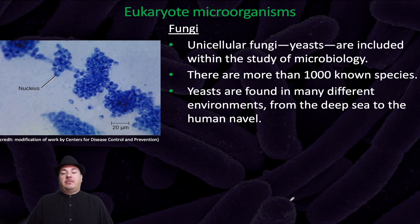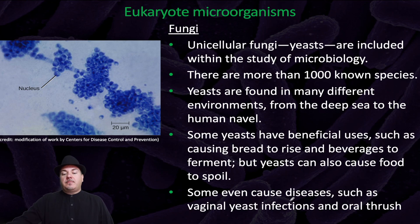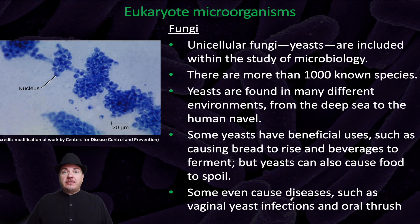For the cellular microorganisms, we have eukaryotes, which include fungi. Unicellular fungi called yeast are included within the study of microbiology. There are more than a thousand known species of yeast, found in many different environments, from deep in the sea to the human navel. Some yeast have beneficial uses, such as causing bread to rise and beverages to ferment, but yeast can also cause food to spoil, and some even cause diseases such as yeast infections or oral thrush.